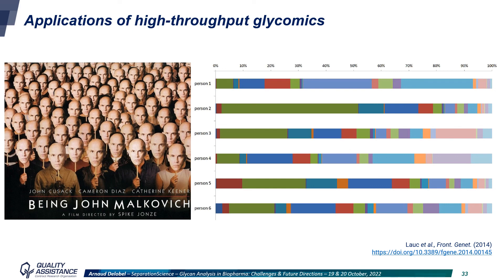High-throughput glycomics can also have another important role in biopharmaceutical development. Glycans are indeed responsible for a large part of inter-individual variations, and biologicals may have very different activity depending on the glyco-context of a patient. For example, therapeutic immunoglobulins compete for Fc receptors with immunoglobulins of the patient, and a patient with 20% of afucosylated IgGs that bind quite strongly to Fc receptors will be very different from a patient with only 2% of afucosylated IgGs. High-throughput glycomics can therefore help to better understand inter-individual variations of the efficacy of a treatment by analyzing the glycome of the patients.